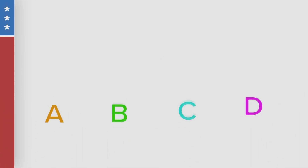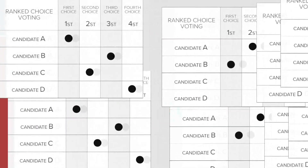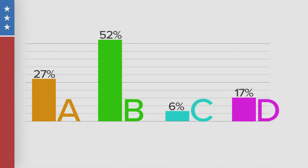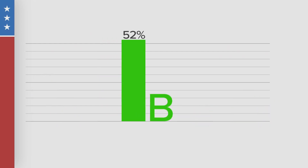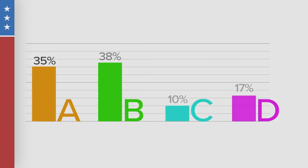Let's say we have four candidates: A, B, C, and D. After everyone's votes are submitted, all of the first column votes in this graphic — your first pick — is tabulated. Let's say the results look like this. B has the most votes at 52%, which means that candidate B wins the election with the majority of votes and the process ends.